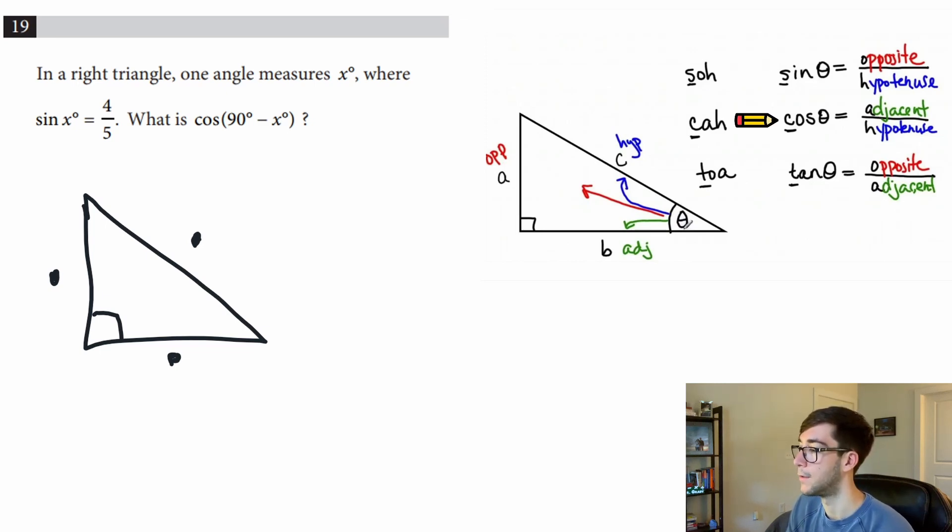Let's read the question and walk through this. In a right triangle, one angle measures x, where sin(x) = 4/5. What is cos(90° - x)?